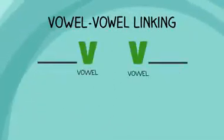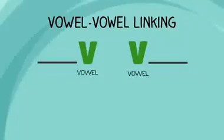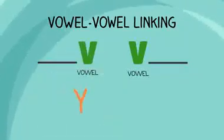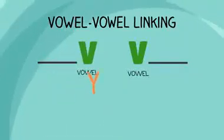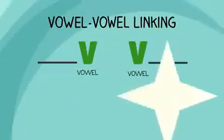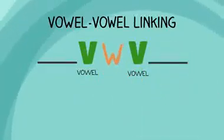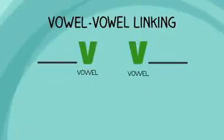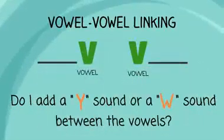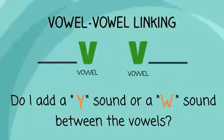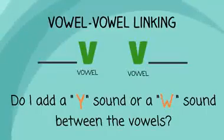Vowel-vowel linking occurs when one word ends in a vowel sound and the next word begins with a vowel. You add a 'yuh' sound or a 'wuh' sound in between the vowel sound at the end of the first word and the vowel at the beginning of the second word. So how do you know whether to add a 'yuh' or a 'wuh'? Let's find out!